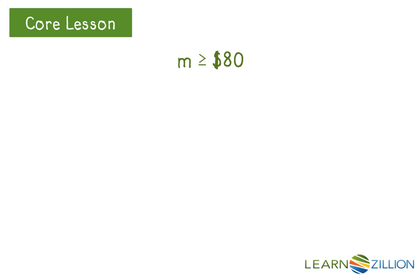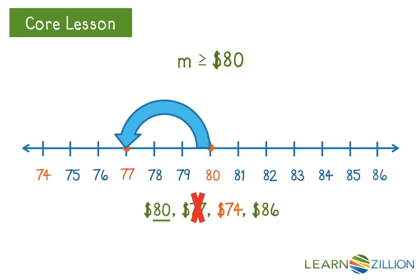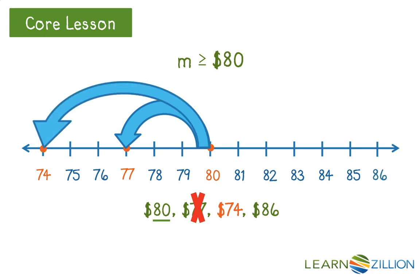Now I will look at my next possible solution of $74. Is $74 greater than or equal to $80? As the dot appears, you can see it landed to the left again on my number line, which makes it a lesser value. So this does not make the inequality true and cannot be a possible solution.